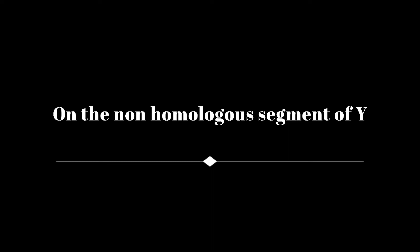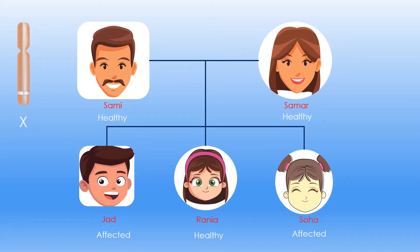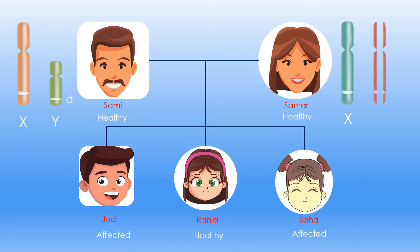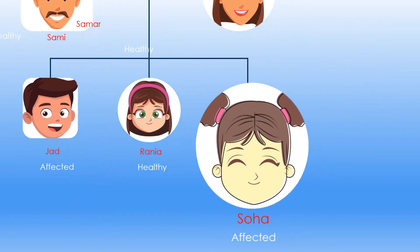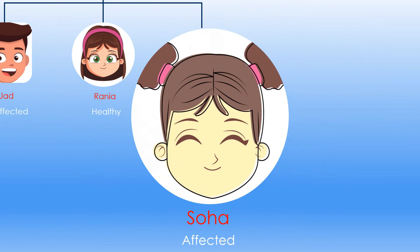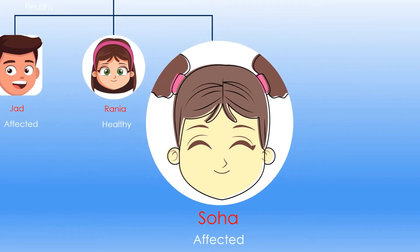If the allele of the disease were located on the non-homologous segment of Y, affected individuals should be only boys. However, the pedigree of this family shows that Saha, who is a girl, is affected. Thus, this is not the case.